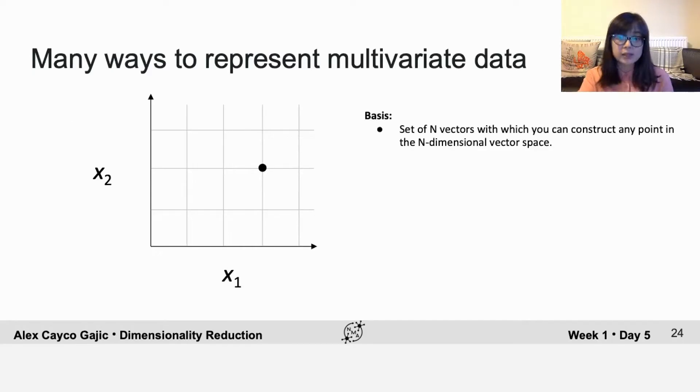In fact, there are many ways to represent multivariate data. We can define a basis as a set of N vectors that you can use to construct any point in an N-dimensional vector space.